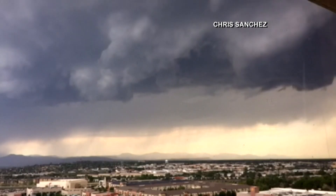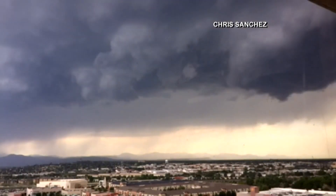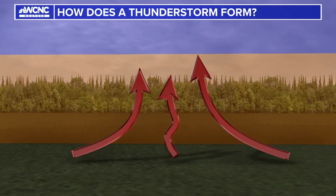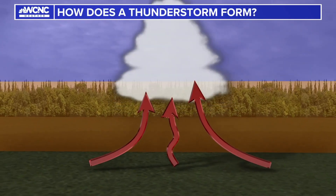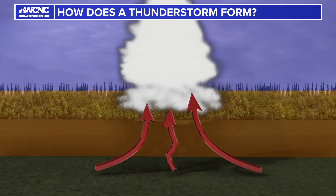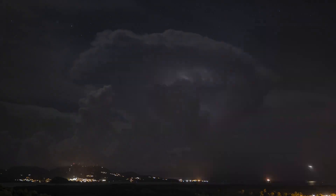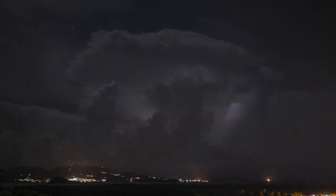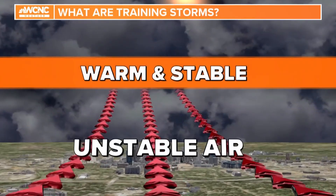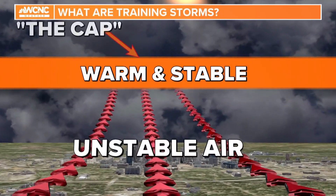To understand this, let's start with the basics. Thunderstorms form from rising moist air. That warm air meets with the colder, drier air, condensing into clouds and eventually turning into storms. However, sometimes that rising air gets trapped by the cap.